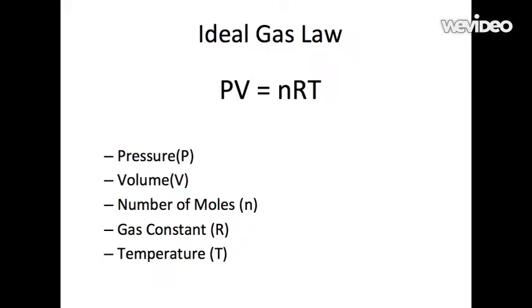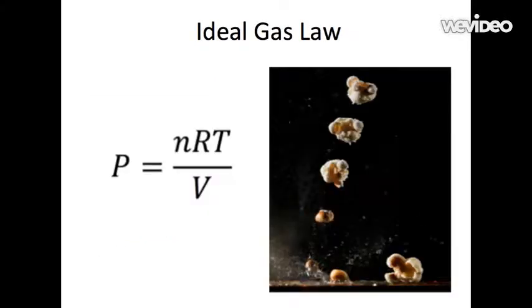The ideal gas law also describes the process of popping popcorn. When we rearrange the ideal gas equation to solve for pressure, we can see how the other variables, such as temperature and volume, are related to it. Here is the rearranged equation. Pressure and volume are inversely related, whereas pressure and temperature are proportional to one another. This relationship between these variables is clear when we make popcorn. As we increase the temperature of the kernel, the pressure inside the kernel also rises until it eventually reaches the breaking point of the shell, which is around 10 atmospheres.